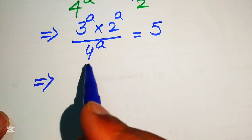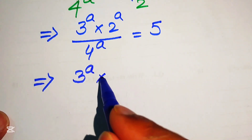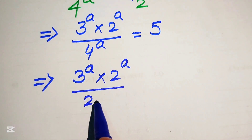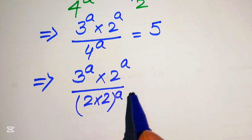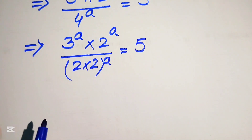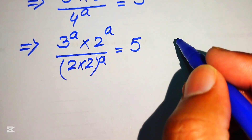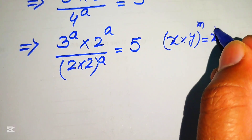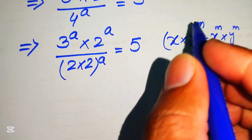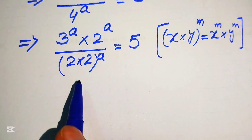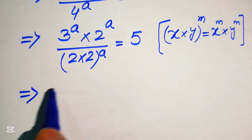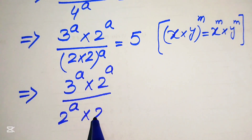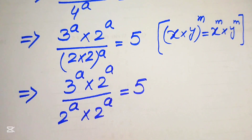In the next step we need more simplification. It will be written as 3 to the power of a multiplied by 2 to the power of a, and here we write 4 as 2 multiplied by 2 with whole exponent a, equals to 5. We apply the exponent law: if we have (x multiplied by y) to the power of m, we write it as x to the power of m multiplied by y to the power of m. So we break the exponent of this term: 3 to the power of a multiplied by 2 to the power of a divided by 2 to the power of a multiplied by 2 to the power of a, equals to 5.